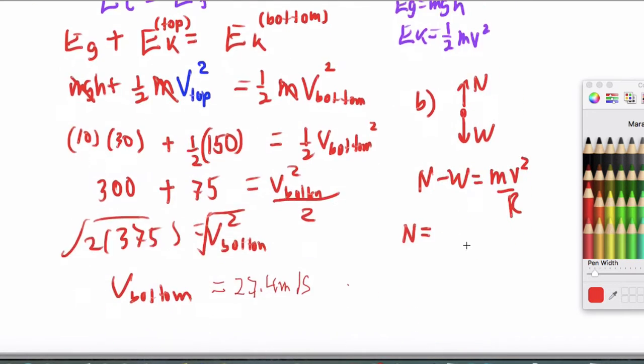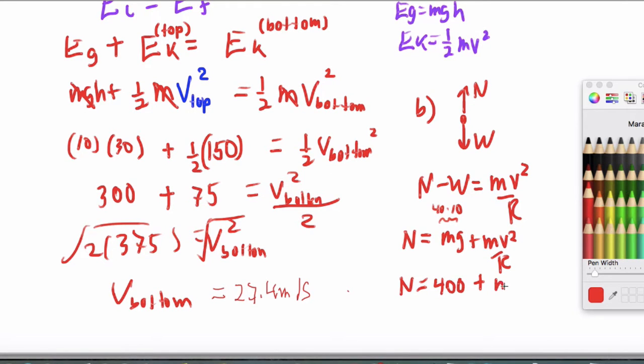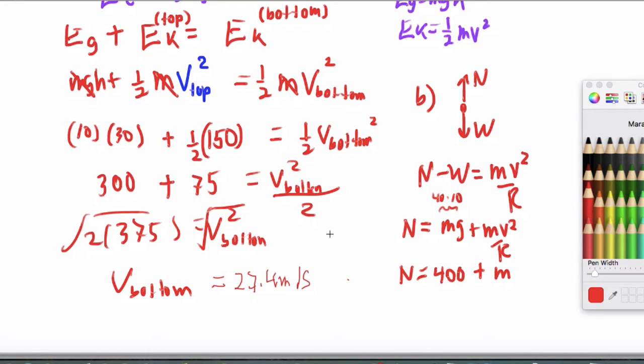Normal equals mg plus mv squared divided by r. And we're told it's 40 kilograms in the problem. So that's going to be 400 right here. Because that's 40 times 10 plus m. And v squared divided by r.